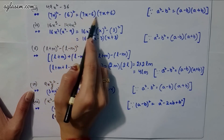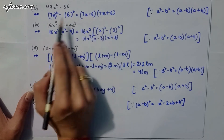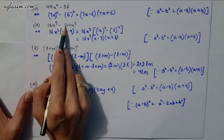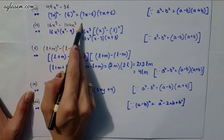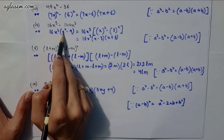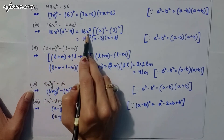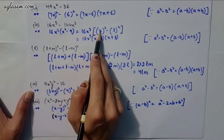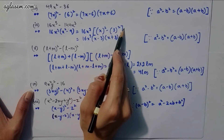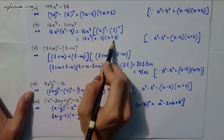Third part: 49x² − 36 = (7x)² − 6² = (7x − 6)(7x + 6). Fourth part: 16x⁵ − 144x³. Factor out 16x³: 16x³(x² − 9) = 16x³(x − 3)(x + 3).